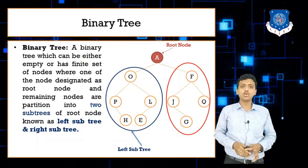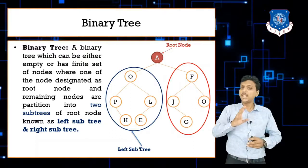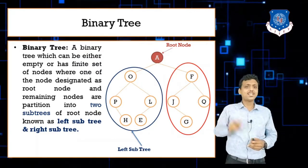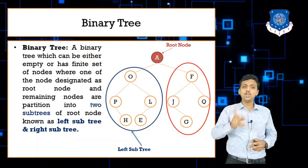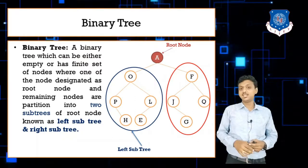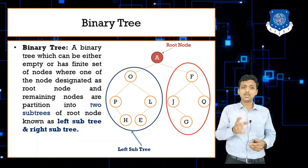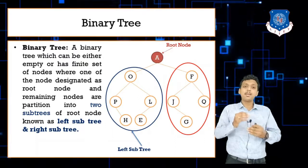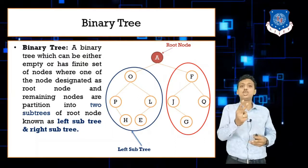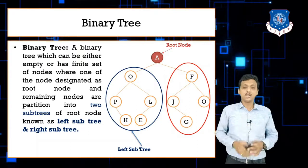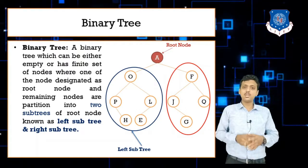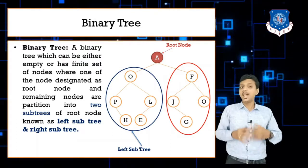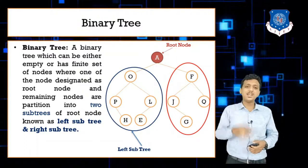Root node A has degree two because it has two children. Node G has degree zero, and node J has degree one. The maximum degree for any node in a binary tree is two — it can be zero, one, or two — giving us two scenarios: left subtree and right subtree.